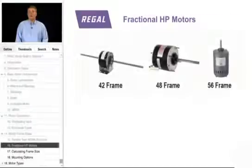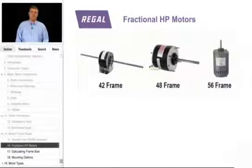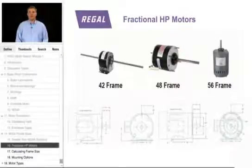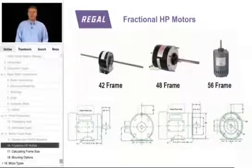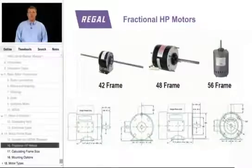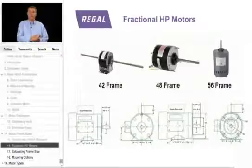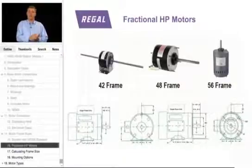The next group of motors in frame size is 42, 48, and 56 frame motors, which we refer to in the industry as fractional horsepower or FHP motors. For 42, 48, and 56 frame motors, the frame size truly tells us where the center of shaft is in an application — so that when I take a motor out and put a motor back in, the center of shaft is in the same spot, ensuring the wheel, blade, or whatever is driven doesn't hit the side of the housing.